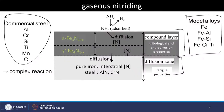Today we will try to understand what happens in nitriding of relatively simple alloys. The simplest would be pure iron. In this lecture we will look at what happens when we nitride pure iron, then move on to understand other alloys such as when aluminum or silicon is added to iron, and like this we can build up to the chemistry of commercial steel.